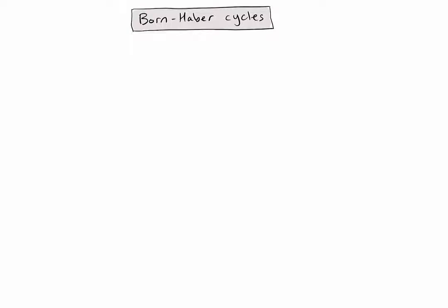A Born-Haber cycle is simply the application of Hess's law to calculate lattice enthalpy specifically. This means that we need to find an alternative pathway to calculate the value for the lattice enthalpy.